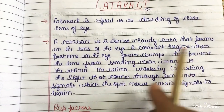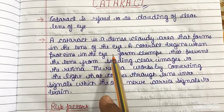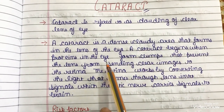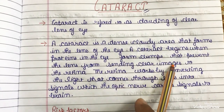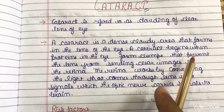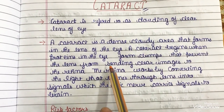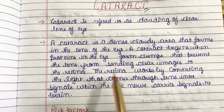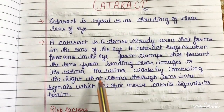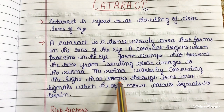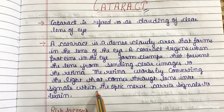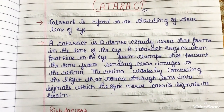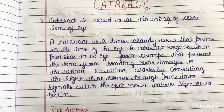A cataract is a dense cloudy area that forms in the lens of the eye. It begins when proteins in the eye form clumps that prevent the lens from sending clear images to the retina. The retina works by converting light from the lens into signals which the optic nerve carries to the brain.